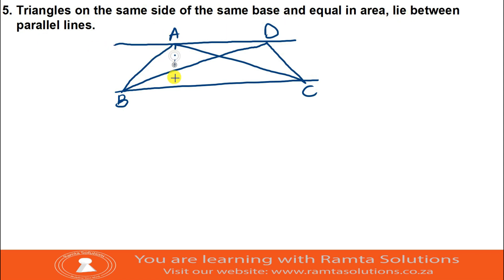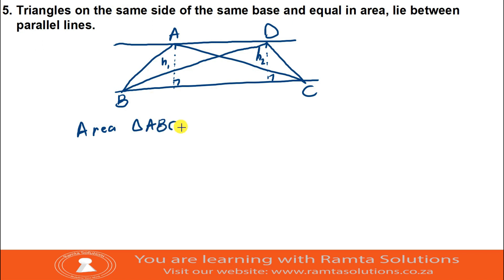The only information we have is that these are triangles on the same side of the same base and equal in area. Area of triangle ABC - what is it? It's half base times height. The base is BC and the height is H1.